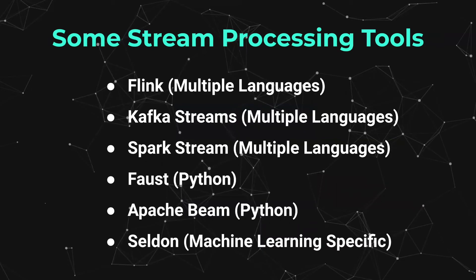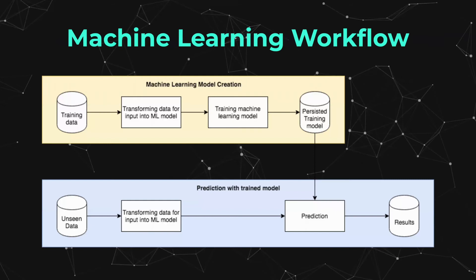Some of the tools available for stream processing include Flink, Kafka Streams, Spark Streaming, Faust Python, and Seldon, which we're going to be using in this specific context. But before we talk about the processing, we need to talk about what is actually being processed. For that, we're going to be talking about the concept of the machine learning workflow.